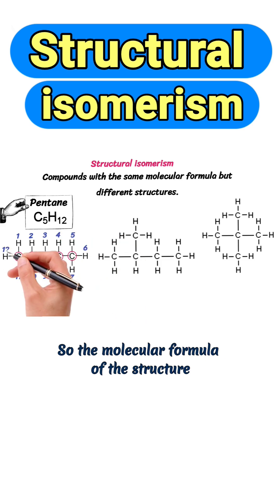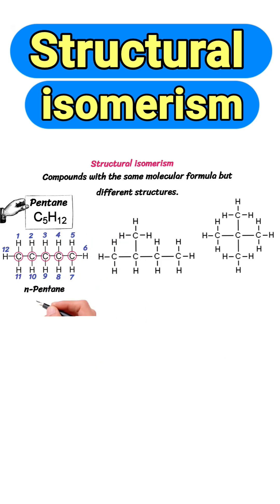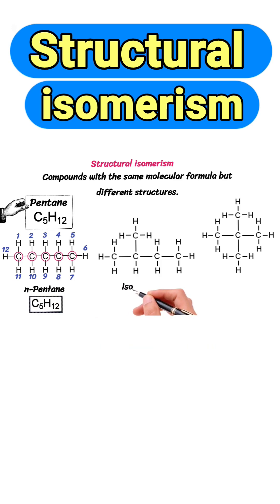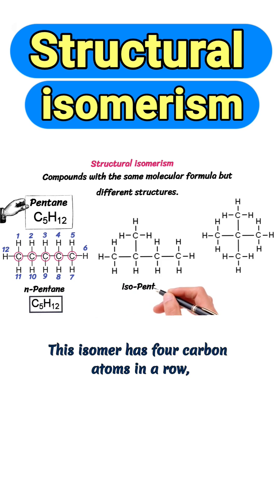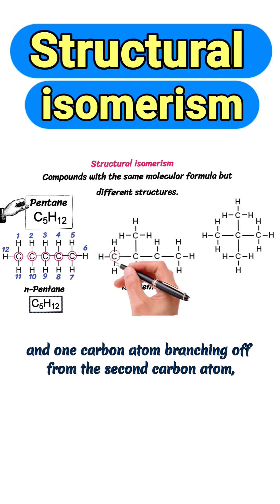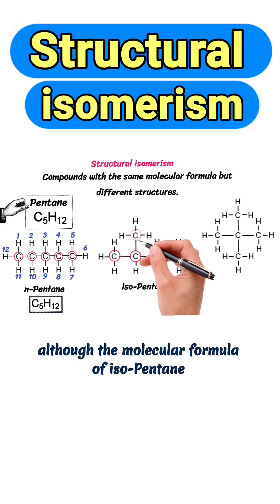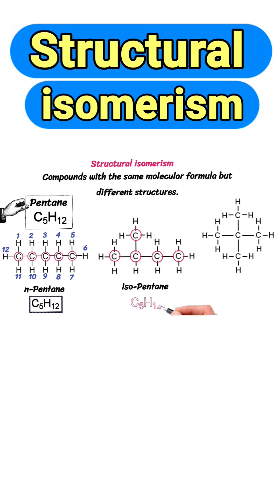The molecular formula of the structure is C5H12. Next we have another structure of pentane — isopentane. This isomer has 4 carbon atoms in a row and 1 carbon atom branching off from the second carbon atom. Although the molecular formula of isopentane is also C5H12.